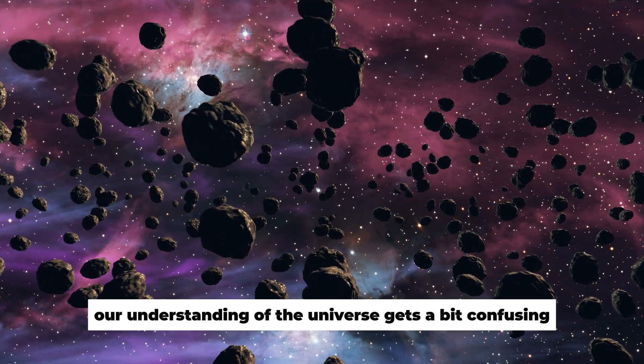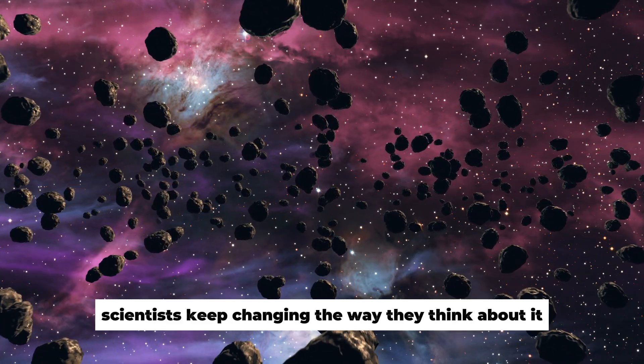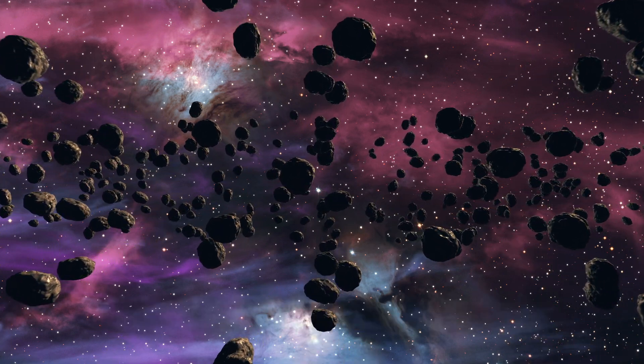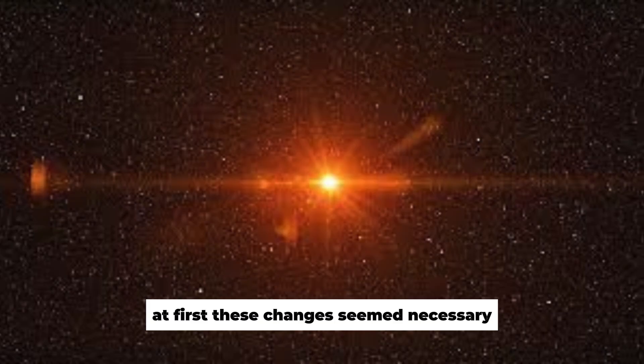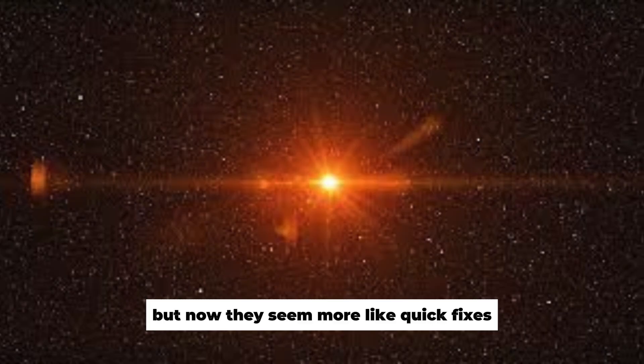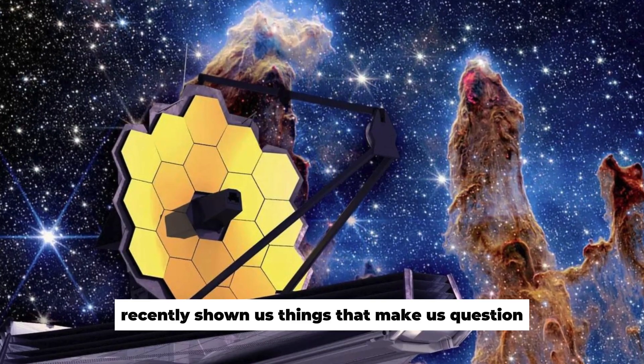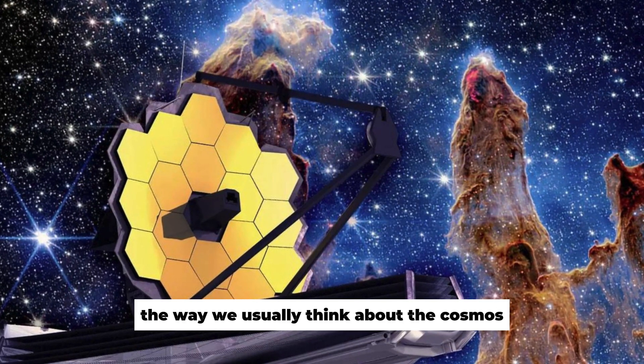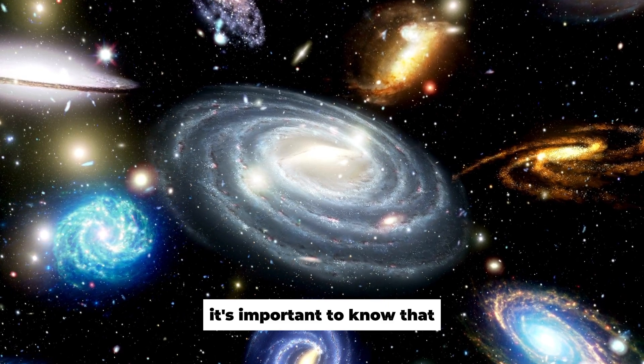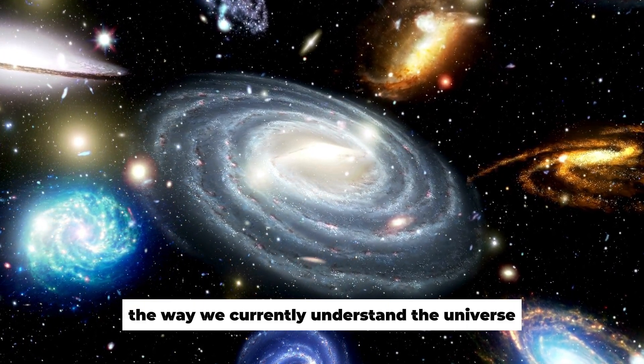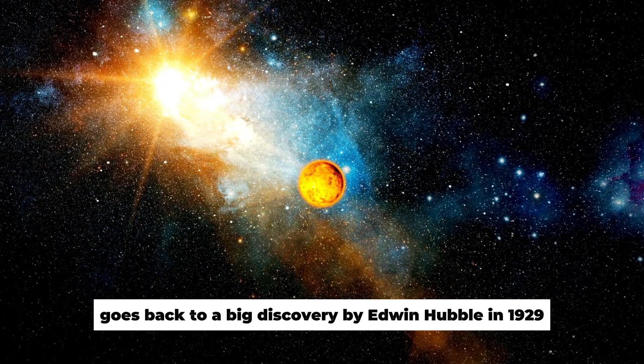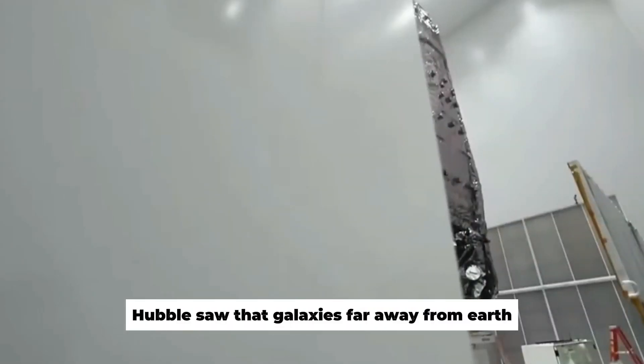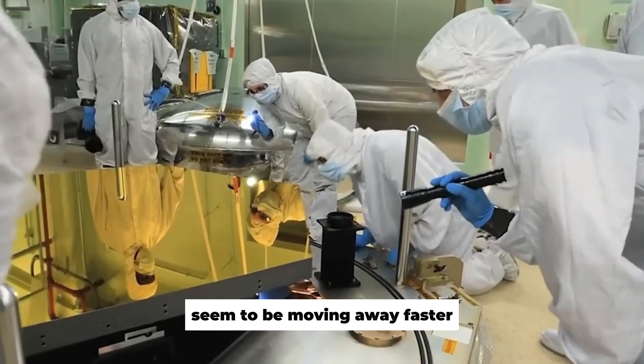Our understanding of the universe gets a bit confusing when we realize that scientists keep changing the way they think about it, based on new information. At first, these changes seemed necessary. But now they seem more like quick fixes for problems in the Big Bang theory. The James Webb Space Telescope has recently shown us things that make us question the way we usually think about the cosmos. It's important to know that the way we currently understand the universe goes back to a big discovery by Edwin Hubble in 1929.